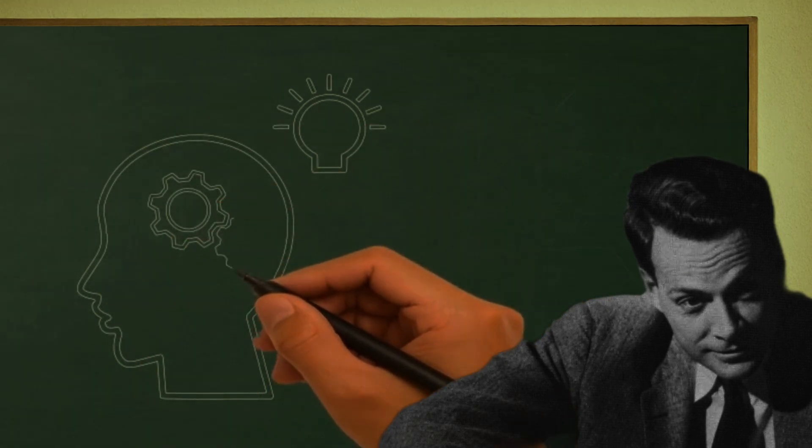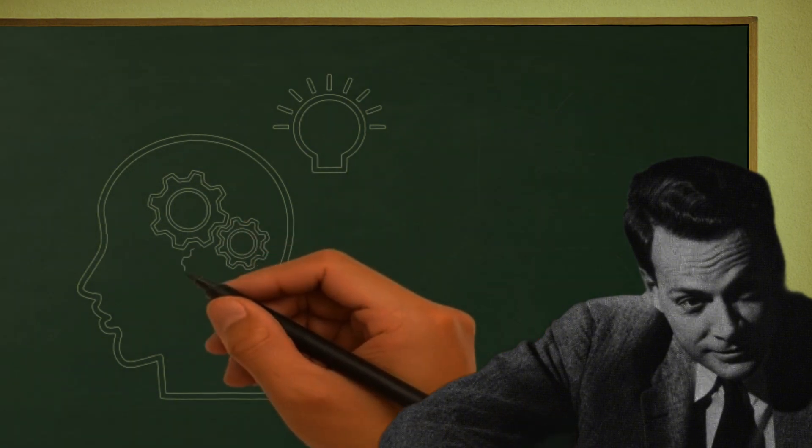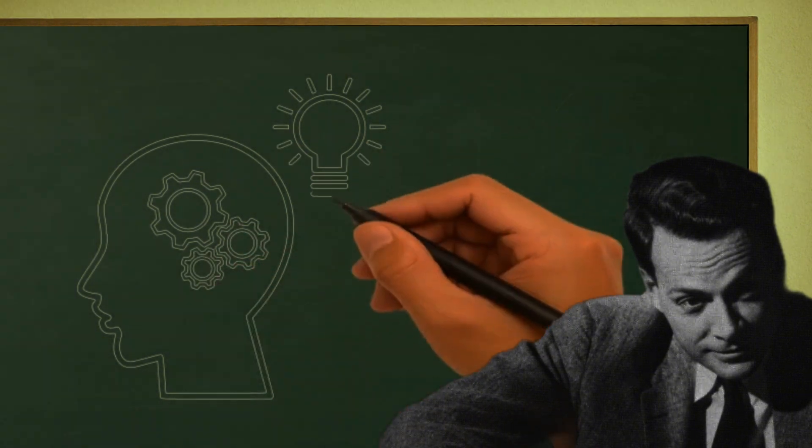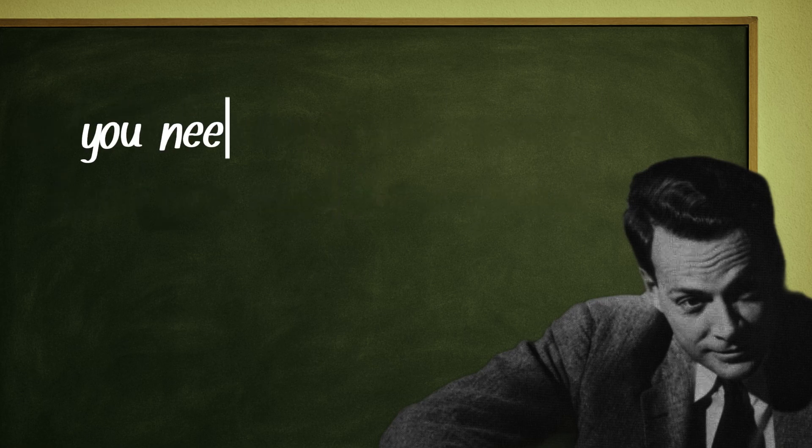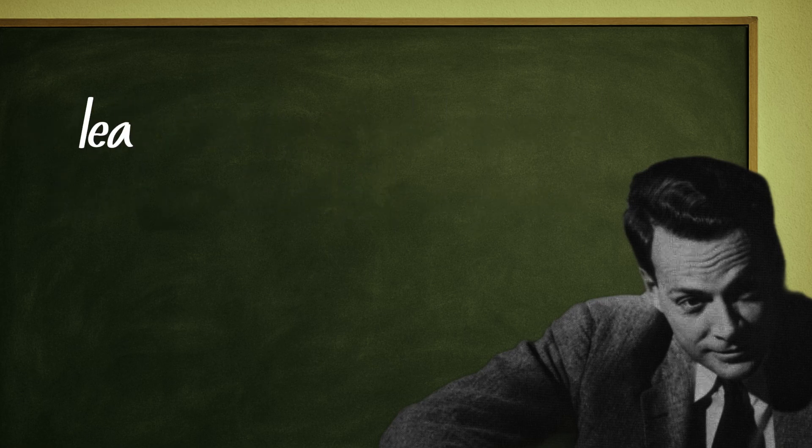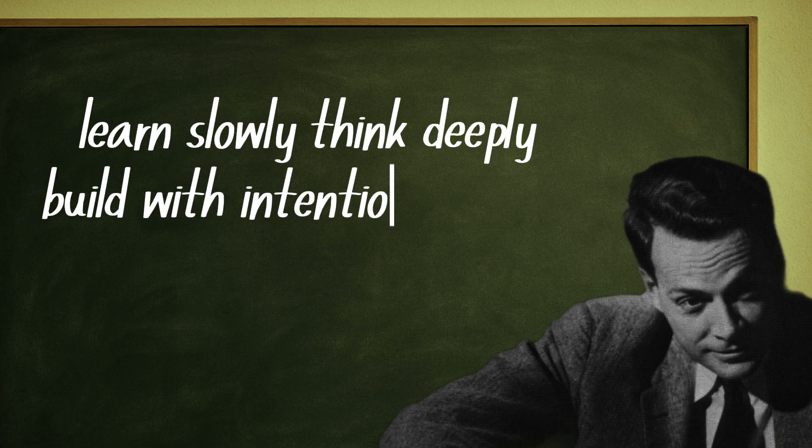You remember best what you've actually thought about, what made you reason, make mistakes, compare, and doubt. And that's why if you want to train your mind like a genius, you need to relearn how to think. Learn slowly, think deeply, build with intention.